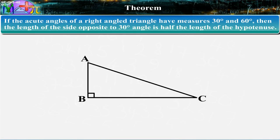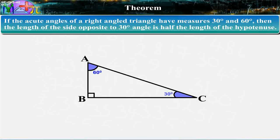Theorem: If the acute angles of a right-angled triangle have measures 30 degrees and 60 degrees, then the length of the side opposite to 30 degrees angle is half the length of the hypotenuse.